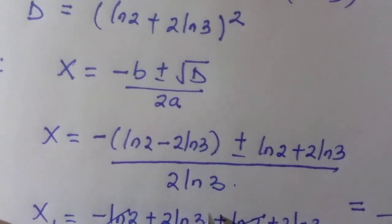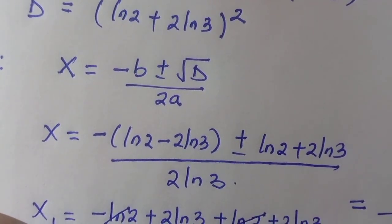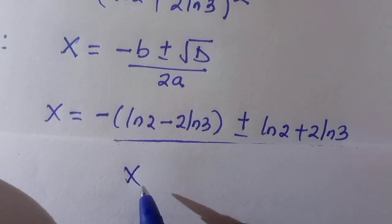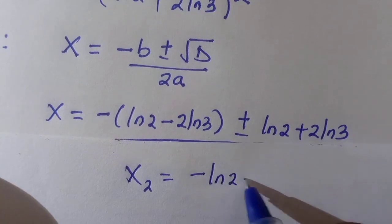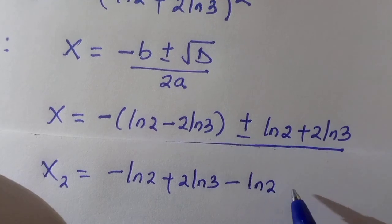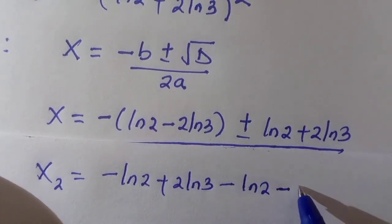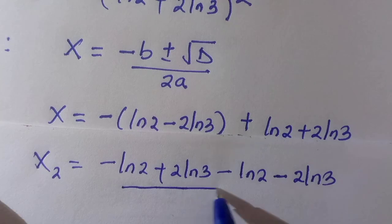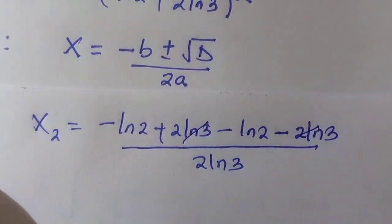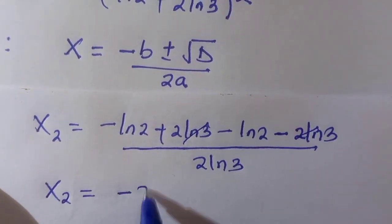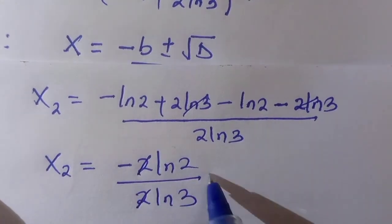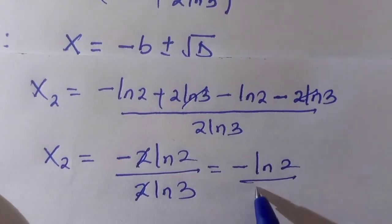For x2, taking the negative sign: minus(ln 2 minus 2 ln 3) minus (ln 2 plus 2 ln 3) divided by 2 ln 3. Expanding gives minus ln 2 plus 2 ln 3 minus ln 2 minus 2 ln 3, which simplifies to minus 2 ln 2 divided by 2 ln 3. The 2s cancel, giving x2 equals minus ln 2 divided by ln 3, which is another real solution.